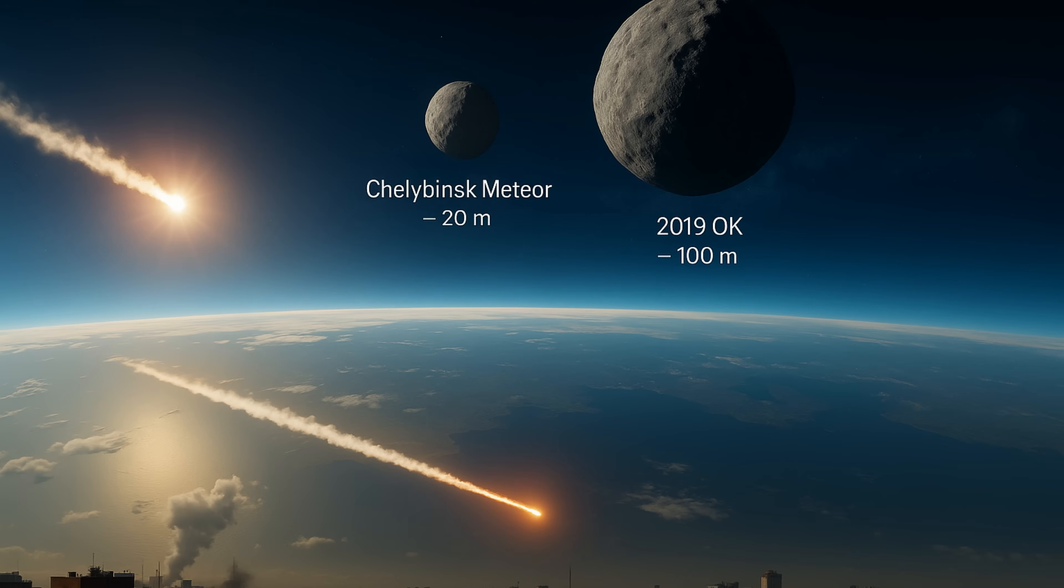For comparison, the Chelyabinsk meteor that exploded over Russia in 2013 injured over 1,500 people. And that rock was only about 20 metres across. 2019-OK was five times bigger.